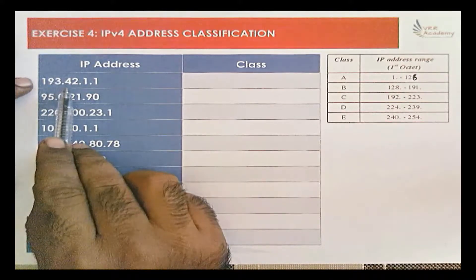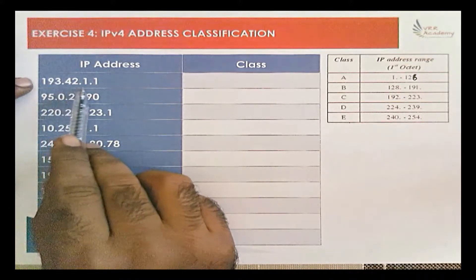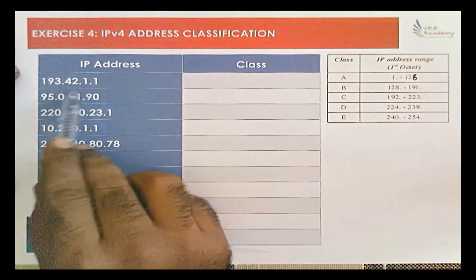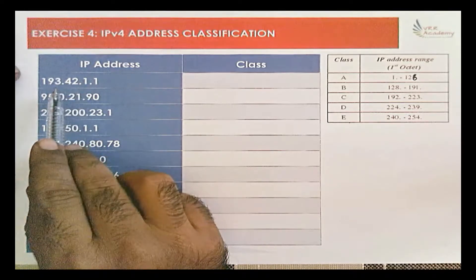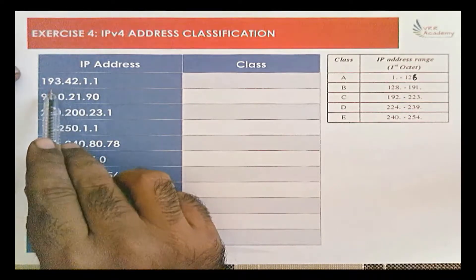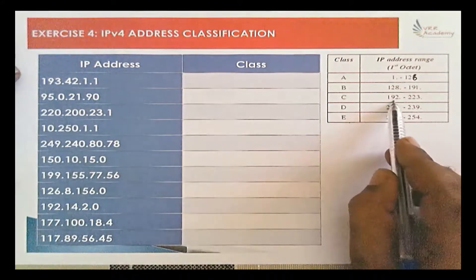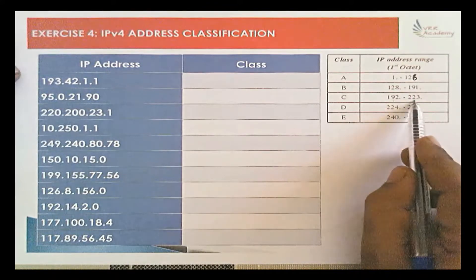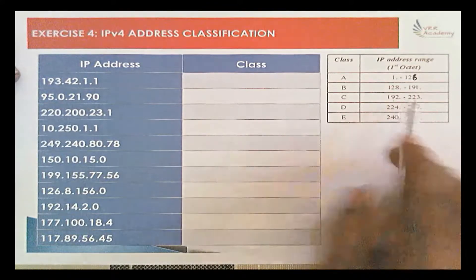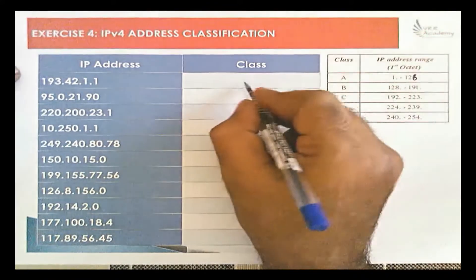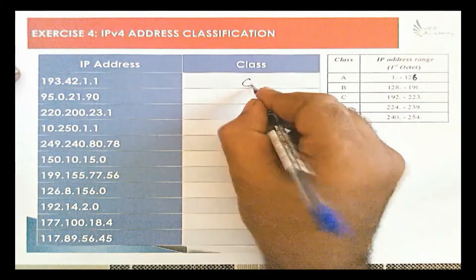The first IP address is 193.42.1.1. We have to identify which class it belongs to. The first octet is 193, which falls in the range of 192 to 223, so this is a Class C IP address.